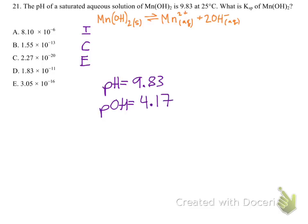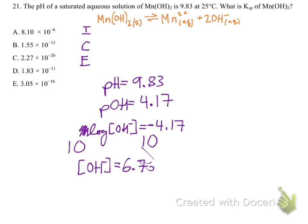Now, if we know the pOH, that means we can solve for the hydroxide concentration. Remember, p means the negative log of something, so the pOH is the negative log of hydroxide, equals 4.17. So I'm just going to multiply both sides by negative 1 and do 10 to both powers, and I'm going to end up getting that the hydroxide concentration is equal to 6.76 times 10 to the negative fifth. And it turns out that piece of information is exactly what we need to fill out our ICE table. So let's get to it.